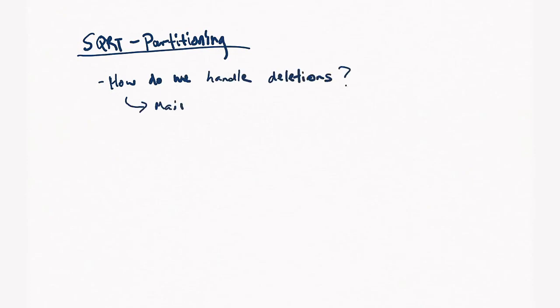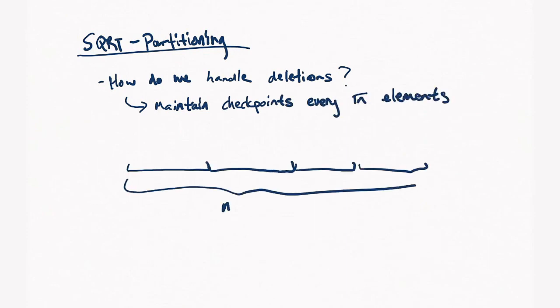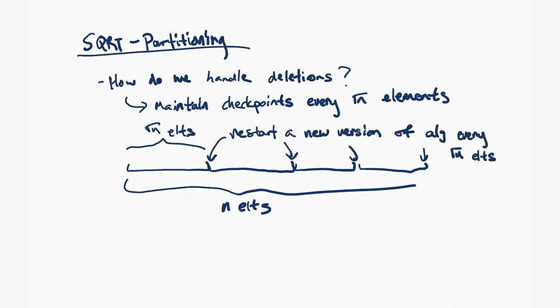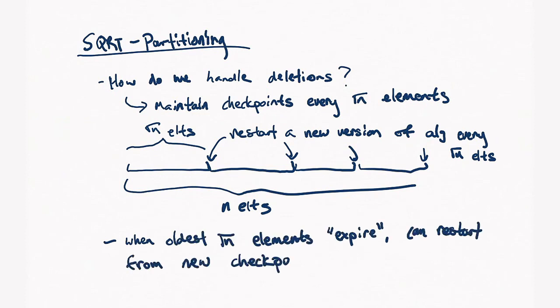Next, we have this trick of square root partitioning that was also used in the submodular maximization algorithm of Espada et al. So, what is square root partitioning? Well, given our sliding window of n elements, we handle deletions by breaking it up into √n size chunks and running a fresh version of the algorithm every √n elements. So, what does this do? It creates a checkpoint every √n elements so that whenever the oldest √n elements expire, we can restart from the checkpoint.